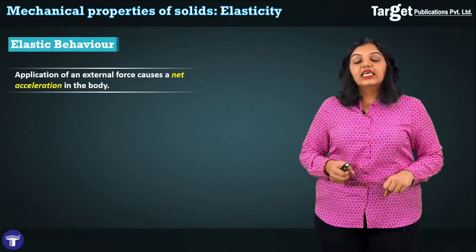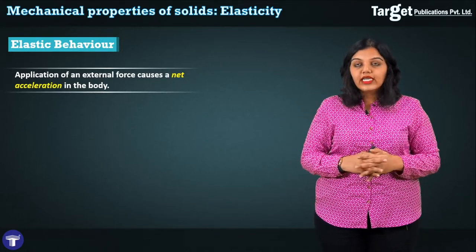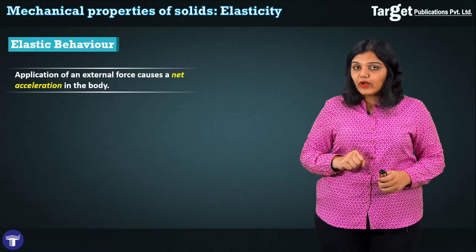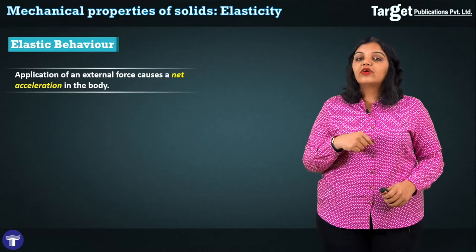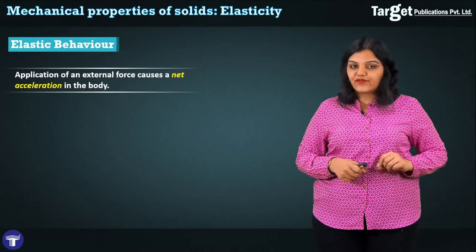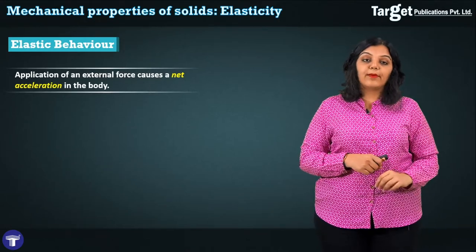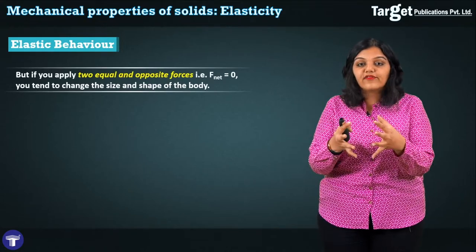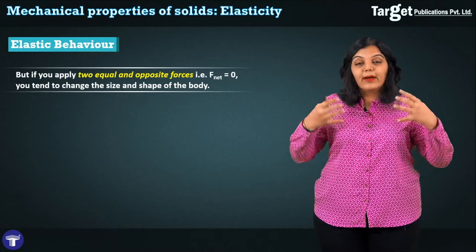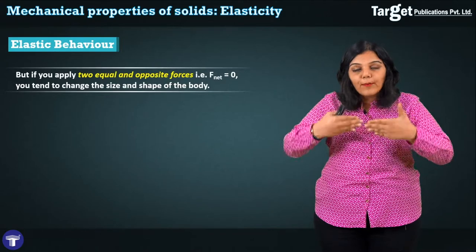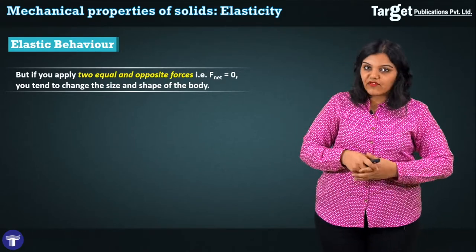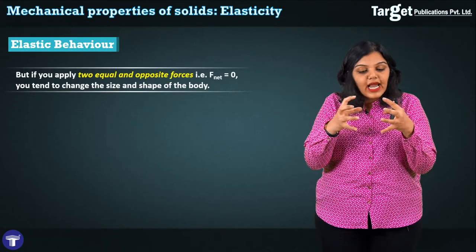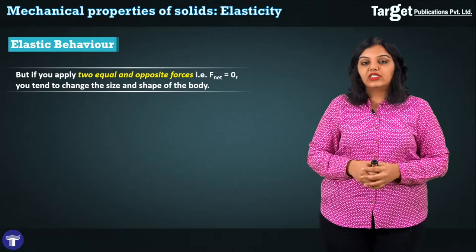Next, let's discuss the deforming force. When you apply a single external force on a body, Newton's second law tells us it should produce acceleration. So how does the shape or size change? If instead of a single force, we set up two equal and opposite forces — so that the net force is zero — and apply them on a body, we tend to change its size and shape. Think of molding clay: pressing it with both hands applies two equal and opposite forces and changes its shape.